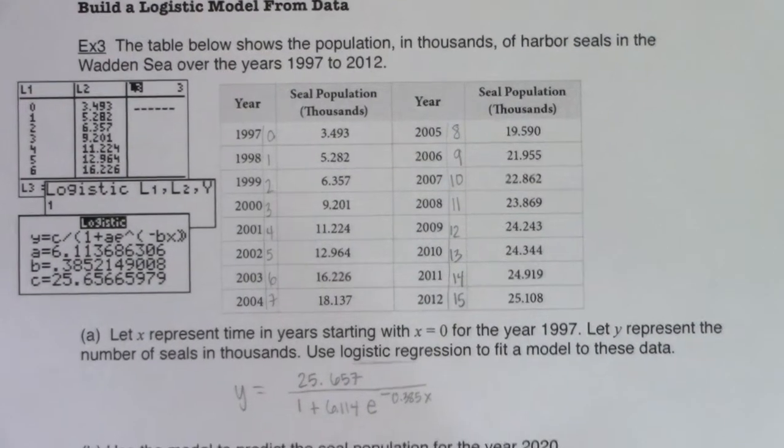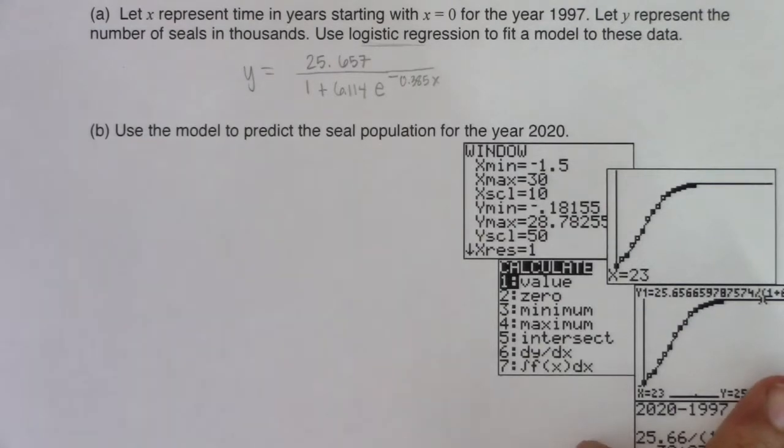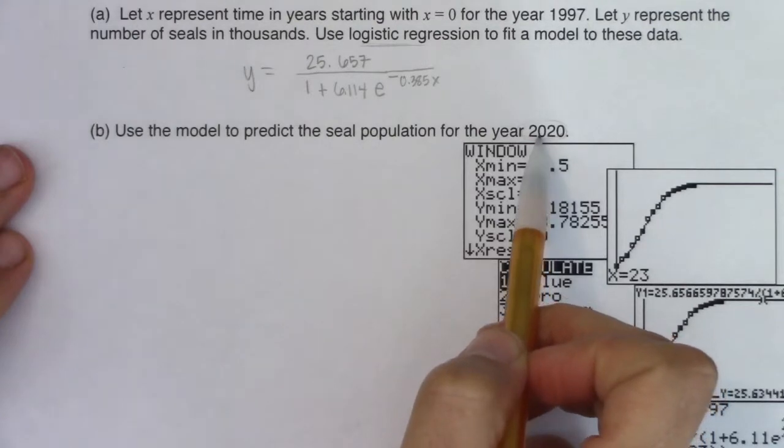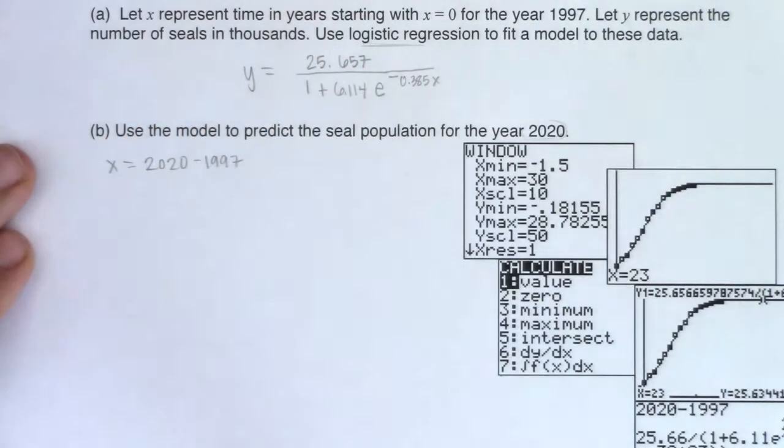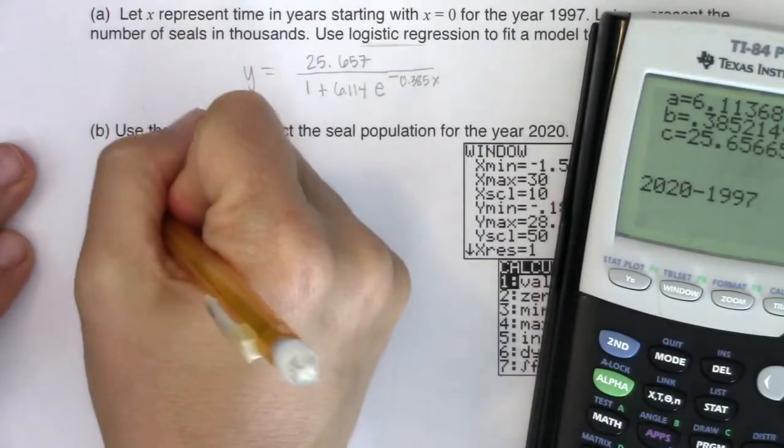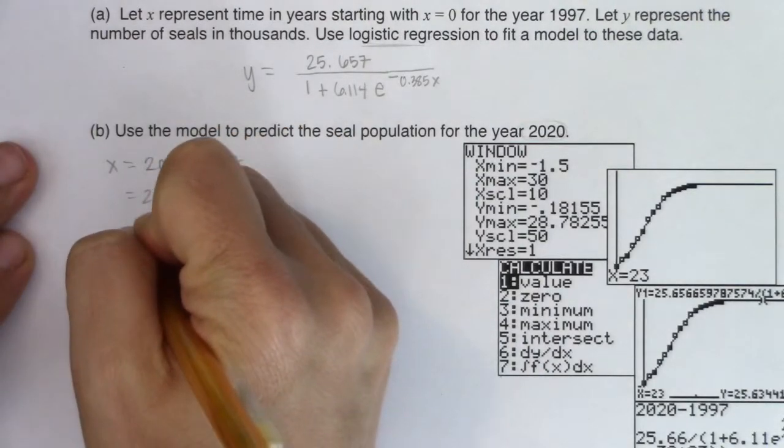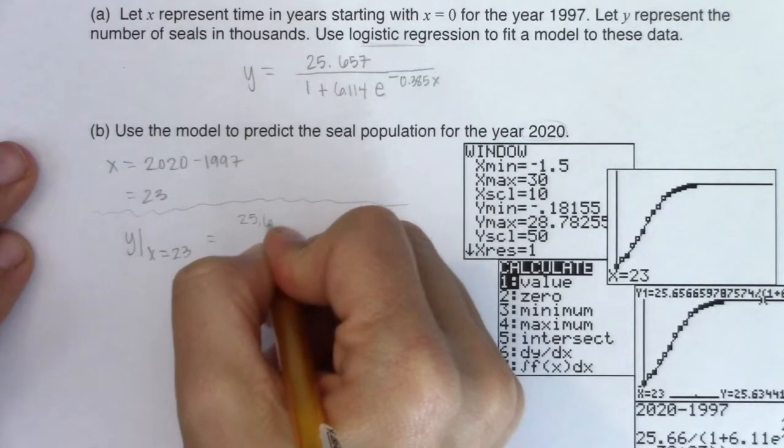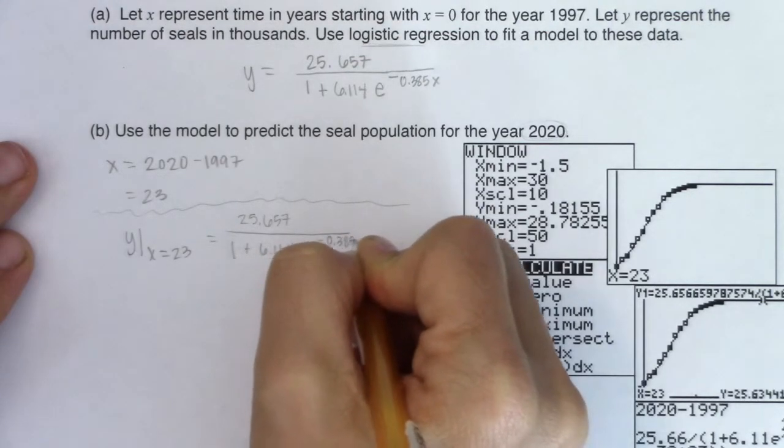Let me scooch this up so we can answer the rest of the questions here. Use the model to predict the seal population for the year 2020. If we're talking about 2020 and my base year was 1997, let's see what our X value is. It's going to be 2020 minus 1997. Let me head over here. 2020 minus 1997. And we're looking at about 23 years. So what I'm trying to find here is the population, what is the Y value, the population value 23 years after we started tracking data. So what is Y when X is equal to 23?